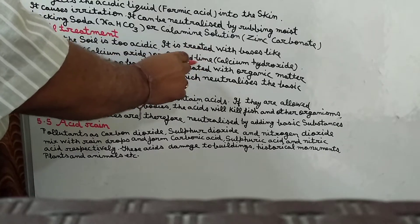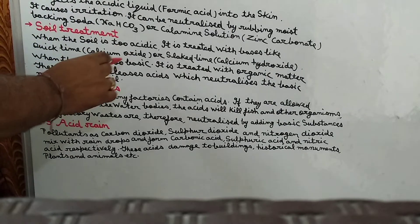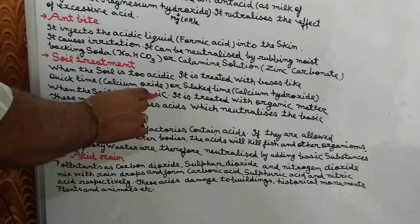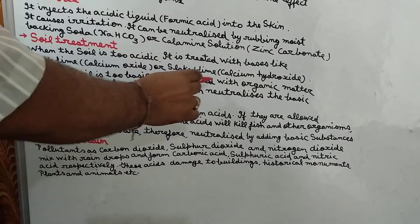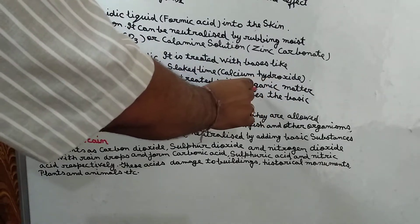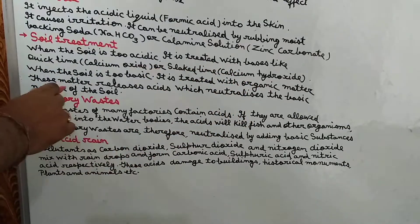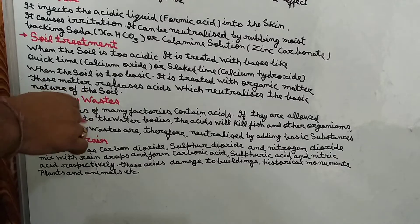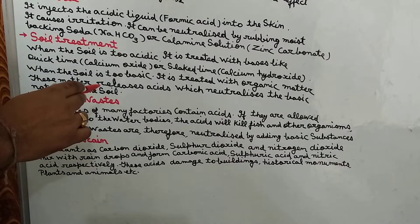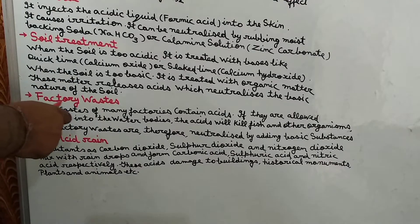जब soil की अंदर ज़्यादा base हो जाए — जब soil बहुत basic हो जाए — तो ऐसी position में इसका treatment एसिड वाली चीजों से करना चाहिए। It is treated with organic matter. This organic matter is acidic in nature, which neutralizes the basic nature of the soil, and the soil comes to a good position for better production.